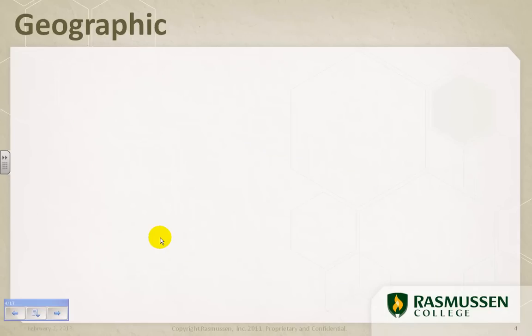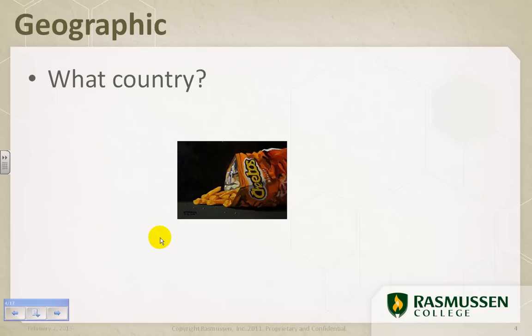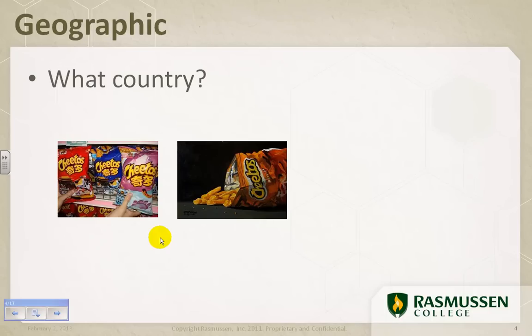When you think geographic, probably the broadest stroke that you can consider is that of the country. What country are you marketing in, and how do you target your message per country? For example, Cheetos. We know Cheetos marketing here. We've got Chester Cheetah. We know what they taste like. There's different line extensions. But what about in China? Cheetos is very popular in China. You notice, not only is the language on the package different, so are the graphics and the colors, and we'll talk about flavors as well.